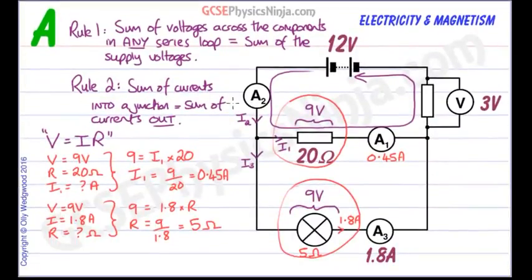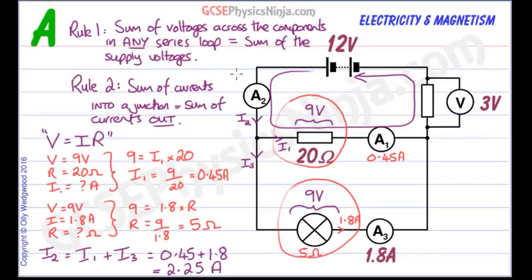The sum of currents into a junction equals the sum of currents out of the junction. So we can write that I2 must equal I1 plus I3. And we know what I1 and I3 are so we can put the numbers in now. 0.45 plus 1.8 and we get 2.25 amps. And that is the value of the current flowing through ammeter A2, 2.25 amps.